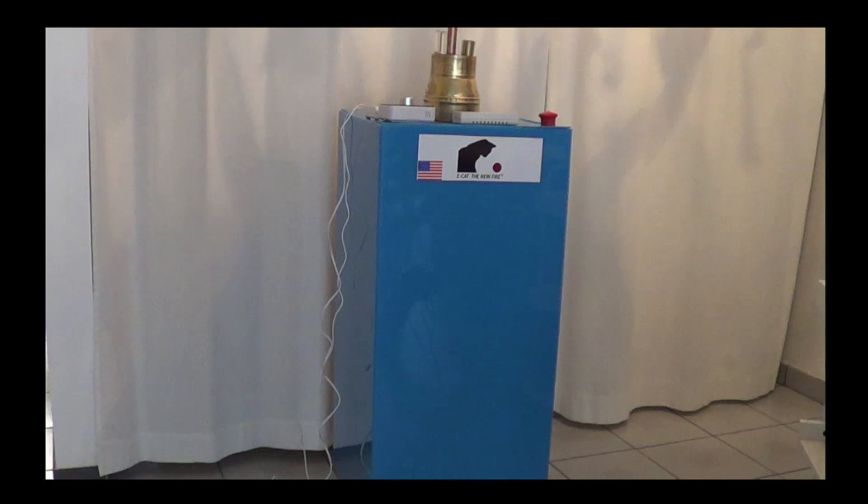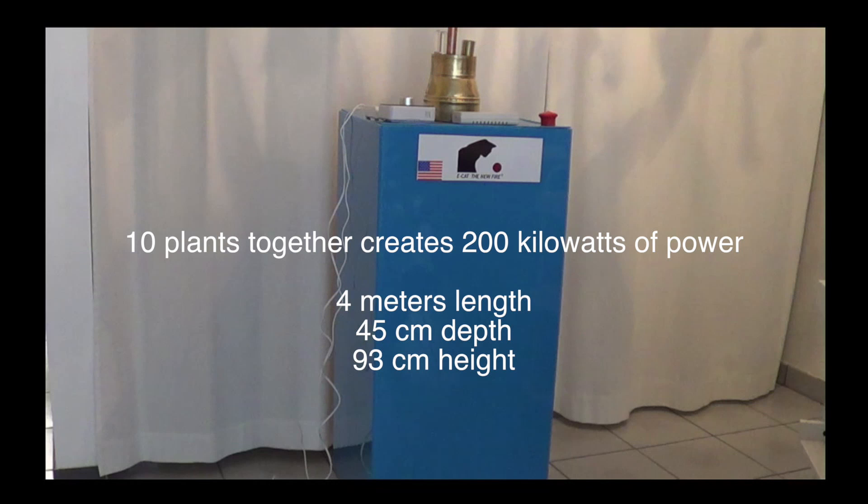A plant is made of many of these modules. For example, putting 10 of them, one beside the other, we will have in 4 meters 200 kW of rating with the same depth and height of a box.